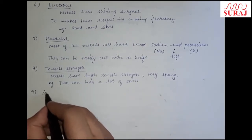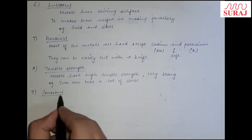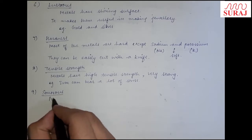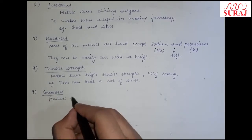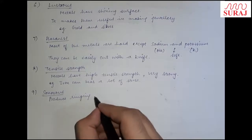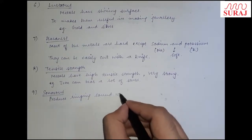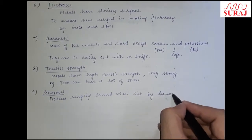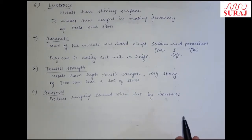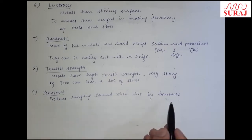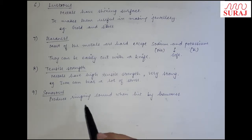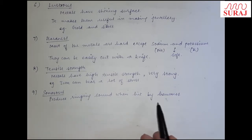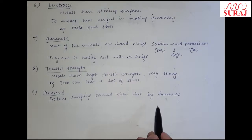Next property is sonorous. Sonorous का मतलब है कि metals produce a ringing sound when hit by a hammer or another piece of metal. जो metal होते हैं, वो एक ringing sound produce करते हैं — उसी property को sonorous कहा जाता है।